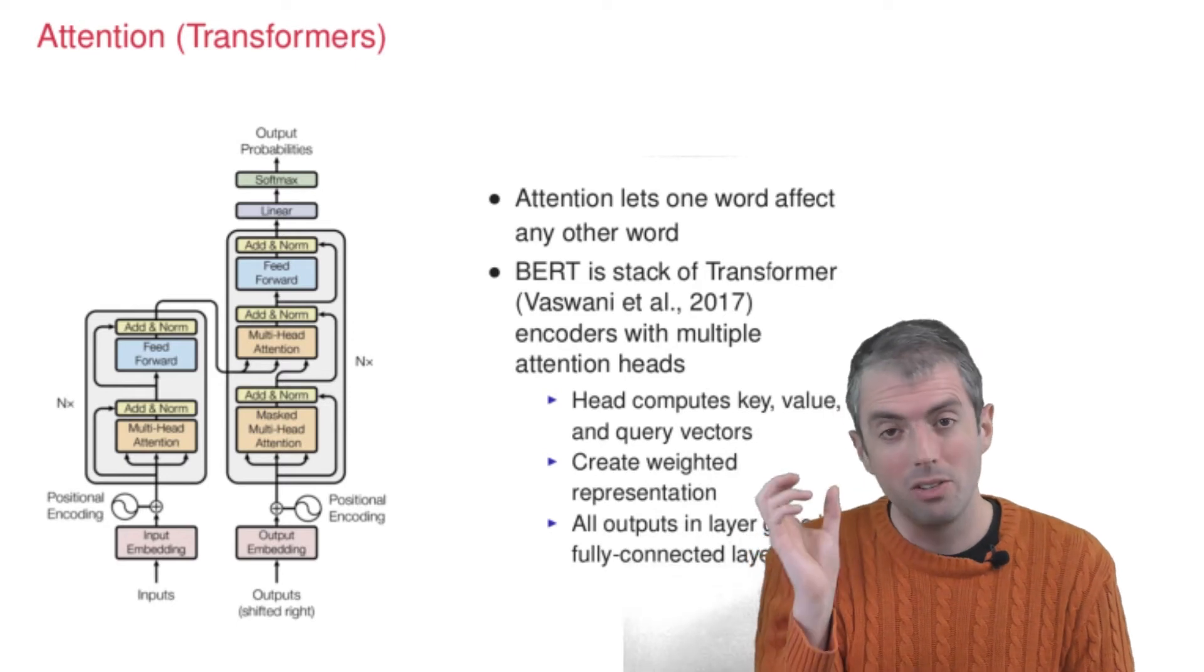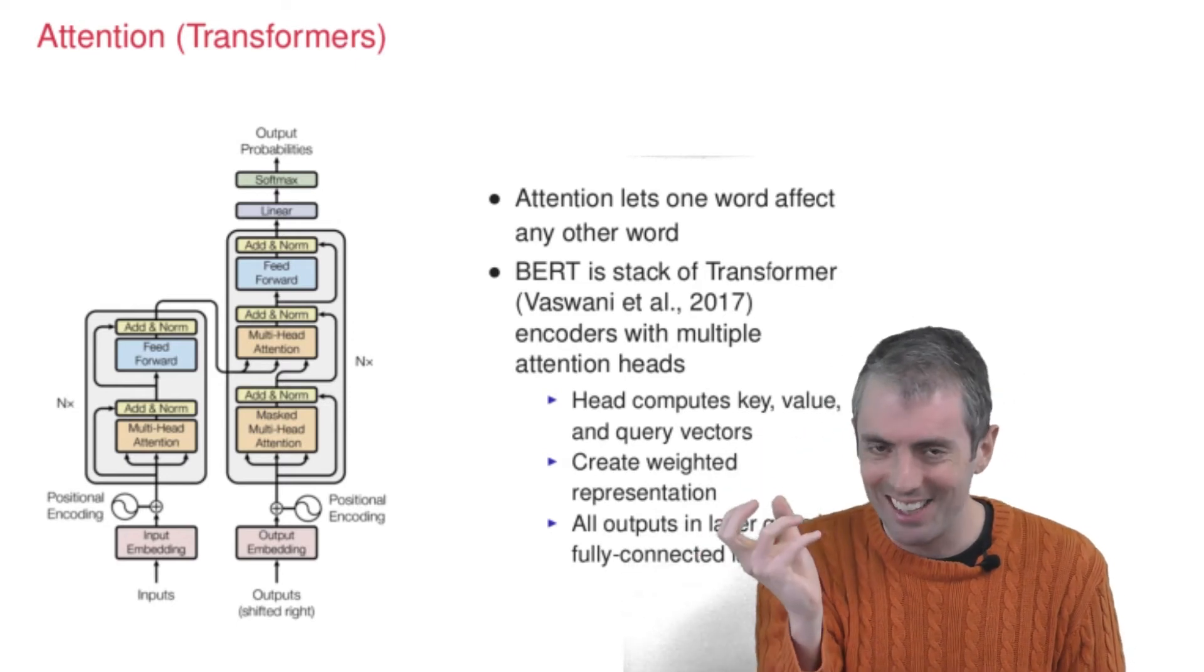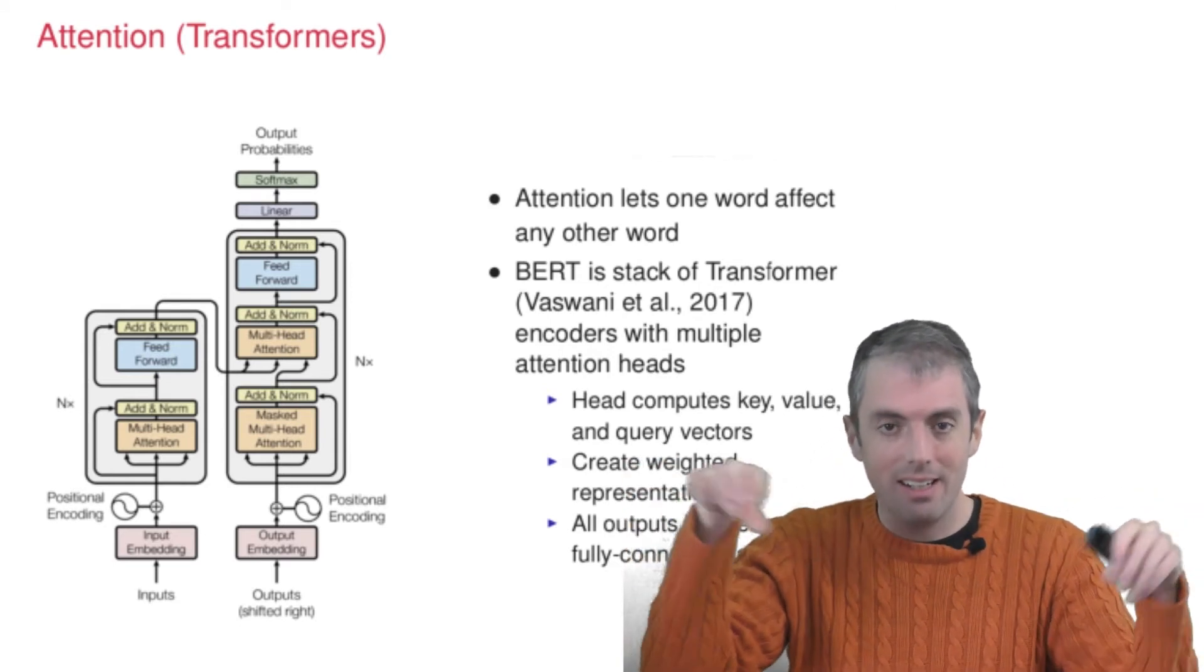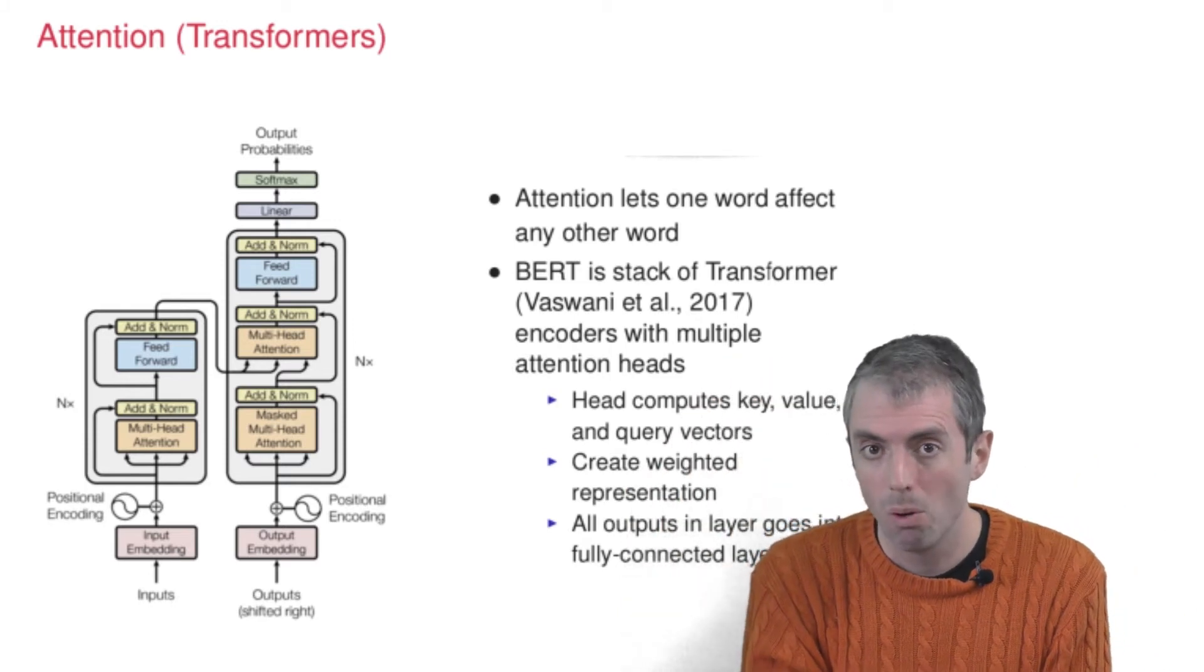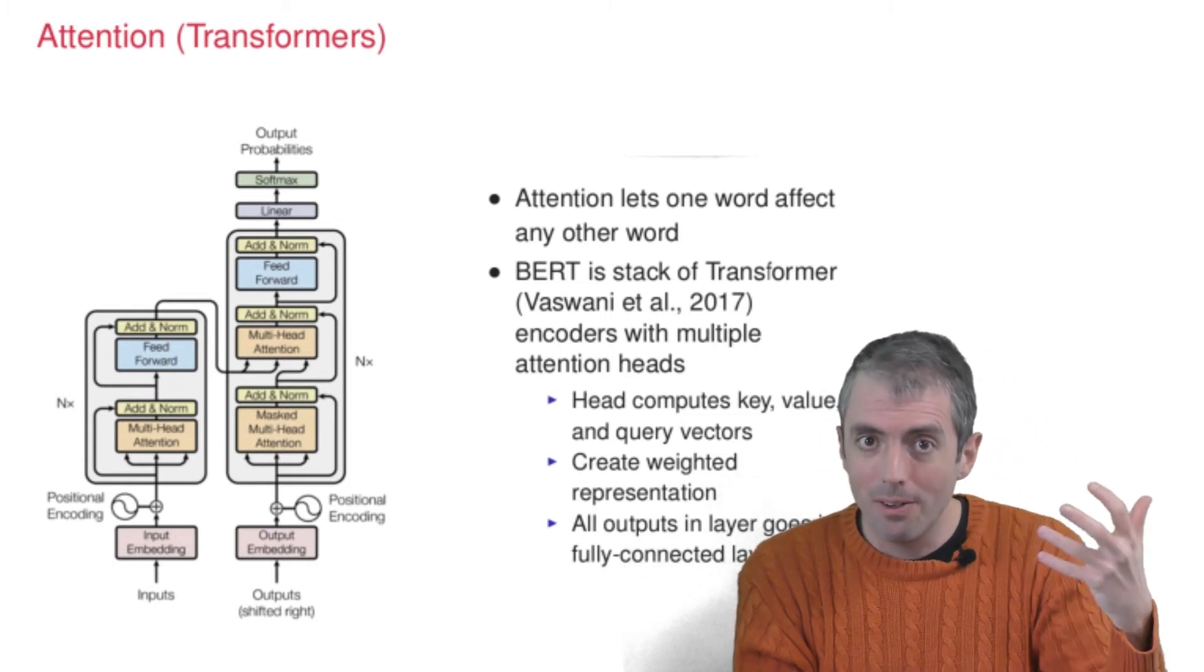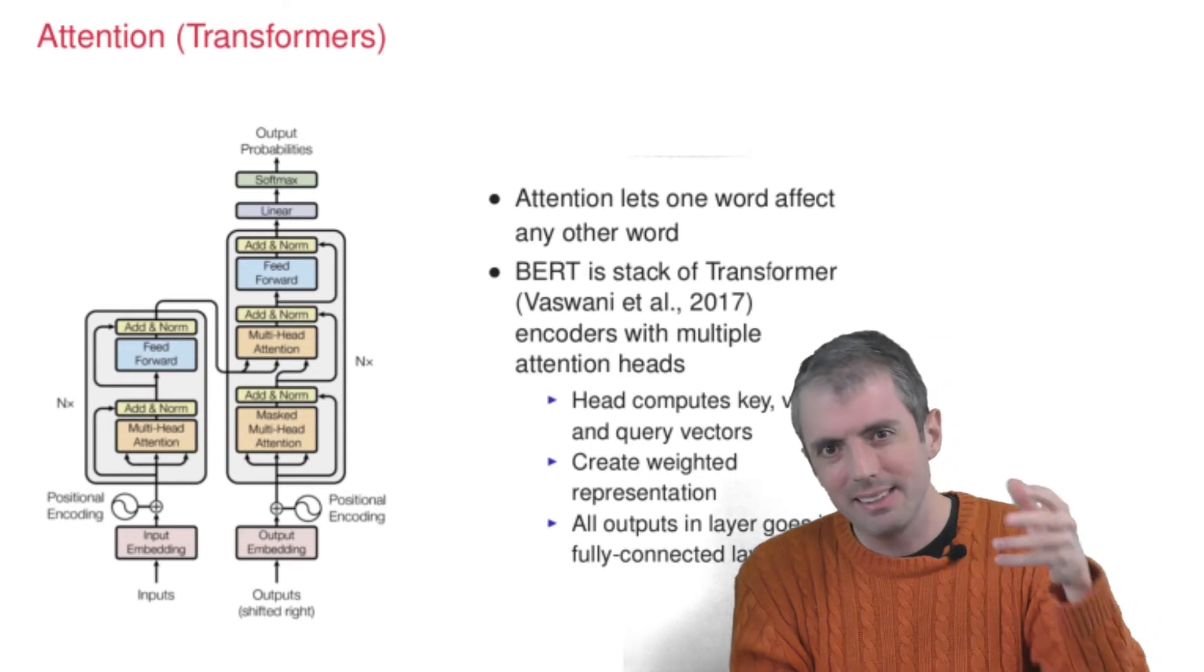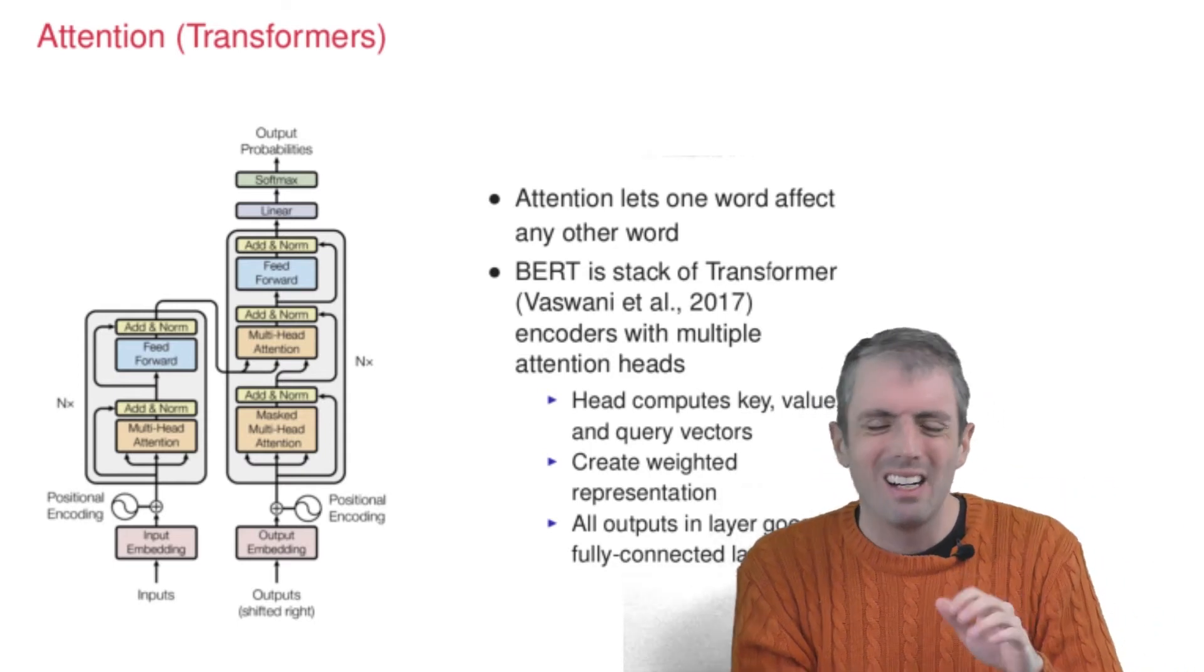Another big innovation was transformers. Transformers are a very specific neural model component. You can think of this as kind of like a Lego. It has a big attention layer. Everything gets then fed forward into a feed-forward network. And this now gives you a different way of representing words.